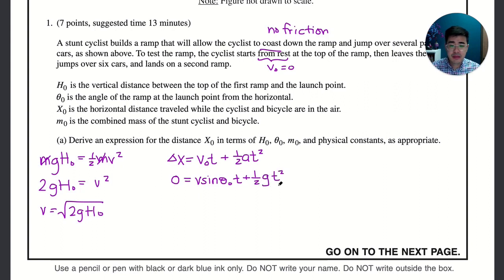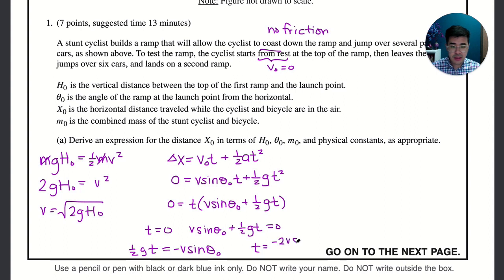Anytime something equals zero we can factor out any like term, so we have a t that we can factor out. This becomes t times v sine theta naught plus one half gt. If we have these two things equal to zero as a product, we can set each of the individual factors equal to zero. t equals zero is not going to be useful because that's the time the cyclist leaves the ramp. But we can set this one equal to zero. If we do that and solve for t, one half gt equals negative v sine theta, so we times both sides by 2 and divide by g. Then the time equals negative 2v sine theta naught all over g. That's the time it takes for it to go across the ramp.